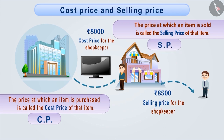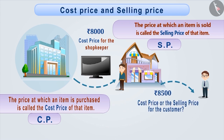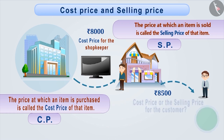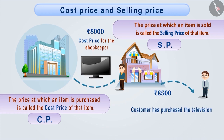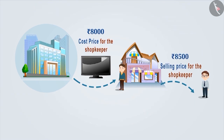Can you tell whether Rs. 8500 is the cost price or the selling price for the customer? Think for a while. Absolutely correct. Since the customer purchased the television for Rs. 8500, therefore, Rs. 8500 is the cost price for the customer.